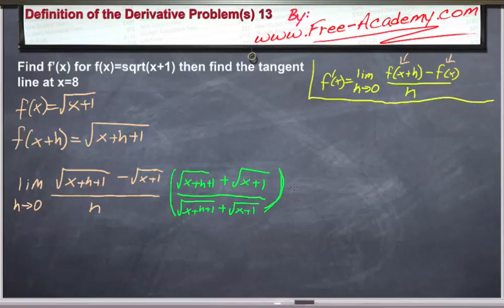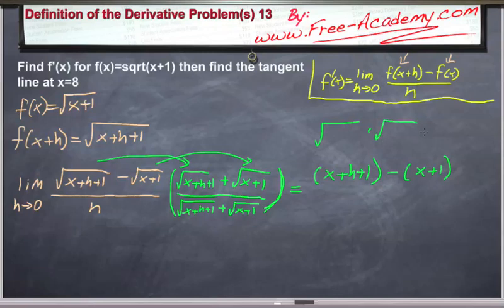The reason why you want to do this is because now when you multiply the top together and distribute everything out, you're going to get (x+h+1) minus (x+1). If you multiply a square root by itself, that equals no square roots. Your cross terms cancel because this is a minus and this is a plus. So this is like (x-3) times (x+3).